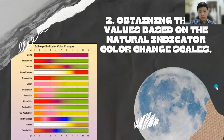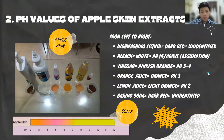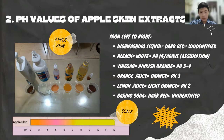Second, let's try to obtain the pH values based on the natural indicator color change scales. First, the apple skin extracts — here are the pH values from left to right. For dishwashing liquid, the color turned dark red, and as you can see, it's not on the scale so I cannot even estimate the pH value, although dishwashing liquid is supposed to have around a neutral pH value.